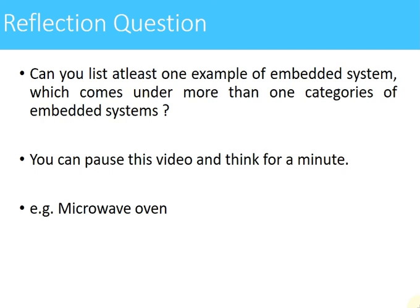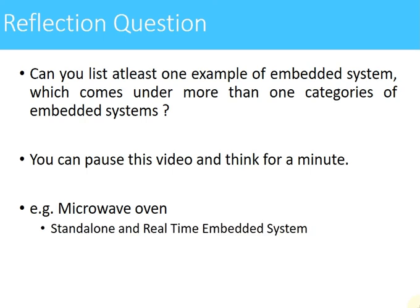I hope you have written down your answer. My answer is a microwave oven — though there can be many different answers. Why microwave oven? Because it comes under the category of both standalone and real-time embedded systems. It is standalone because the user gives input, it processes it and gives output, and it is only connected to the power supply externally. It is a real-time system because whenever the user sets the timing or temperature, the microwave oven must turn off within that stipulated period of time set by the user — it should not take more than that.